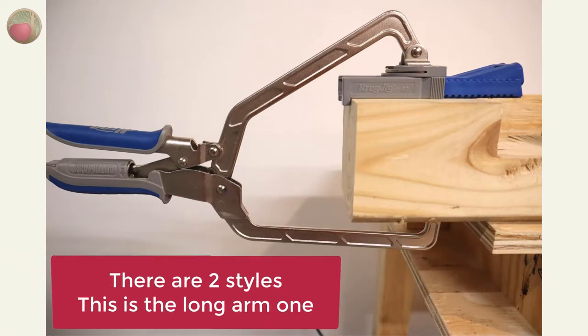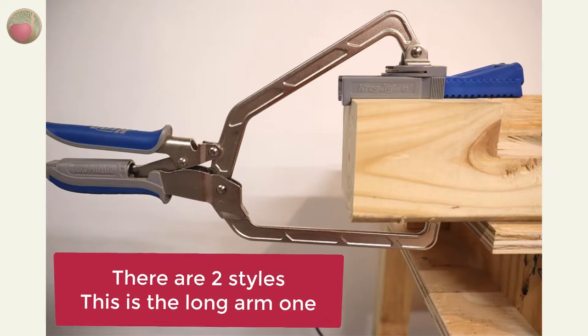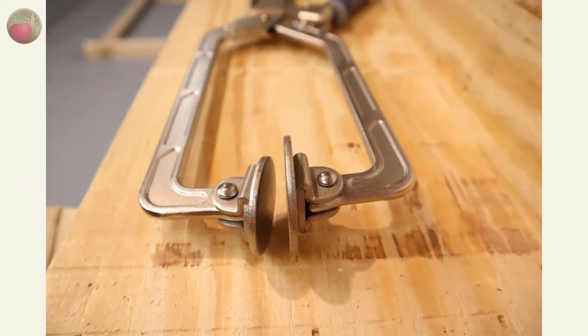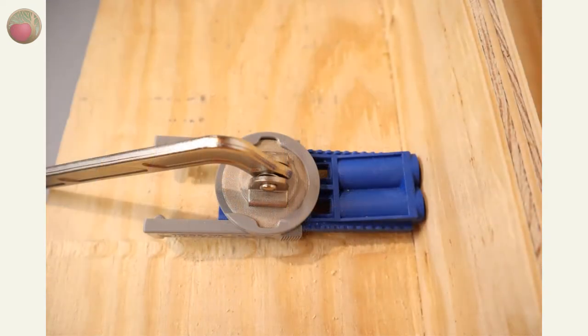There are two such Kreg clamps. One has far longer arms than the other and it's the one shown here. The two flat ends of the clamp are different sizes. The big one slide fits into the K3.